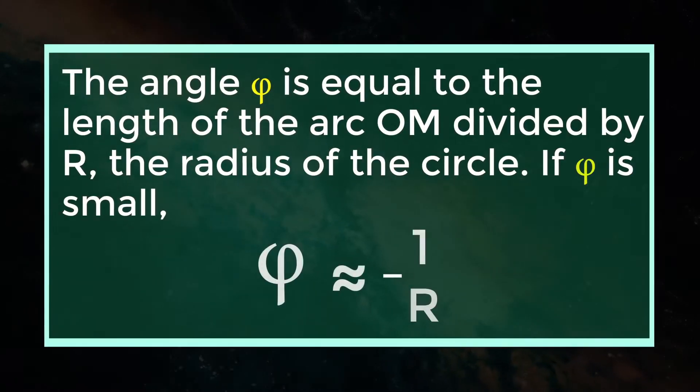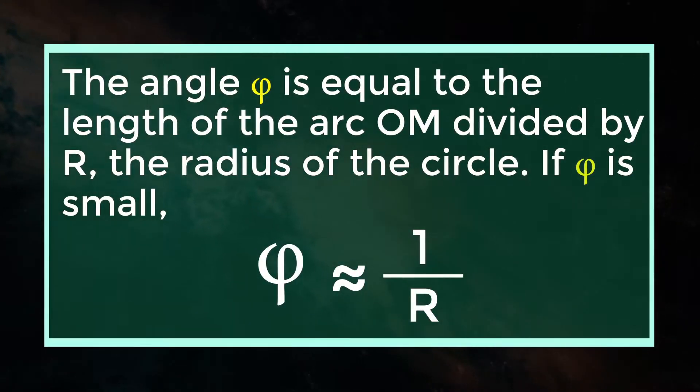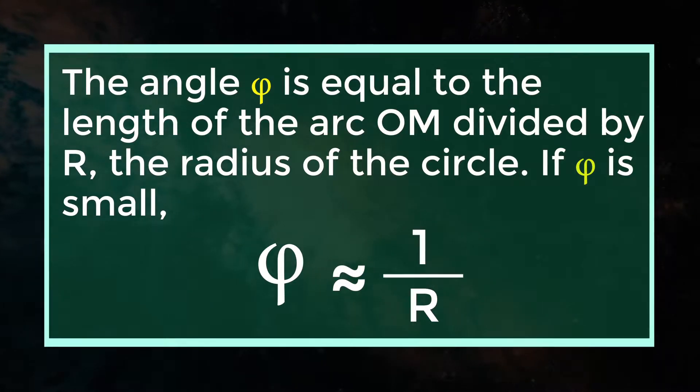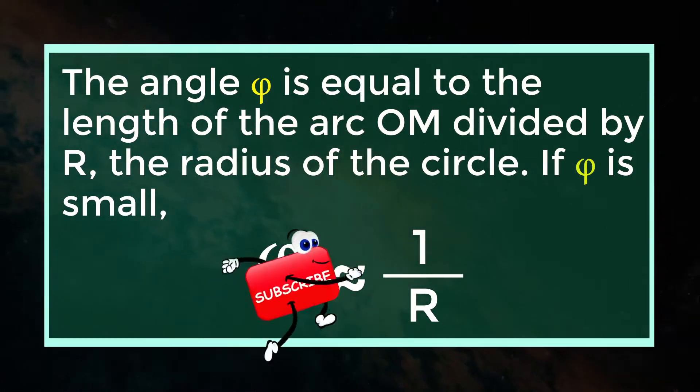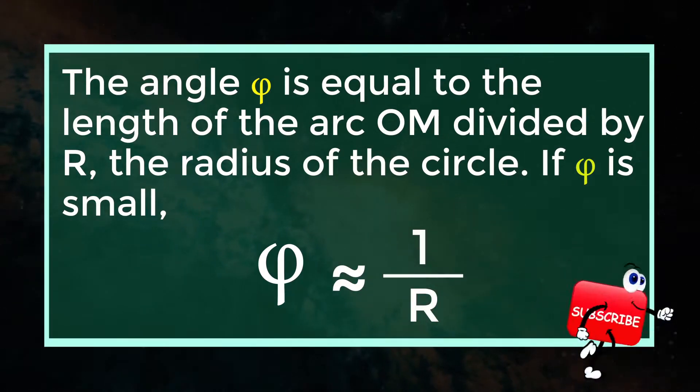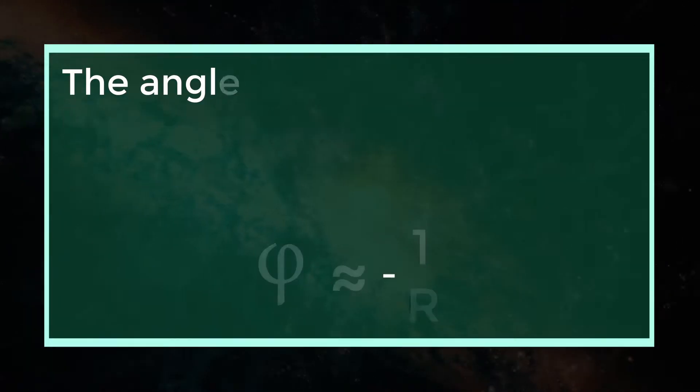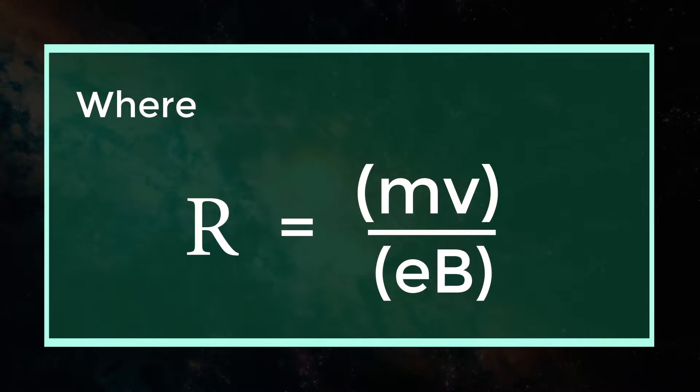The angle θ is equal to the length of the arc OM divided by R, the radius of the circle. If θ is small, θ = ℓ by R, where R = mv by eB.